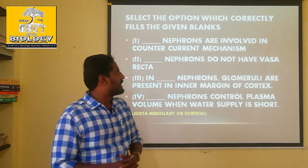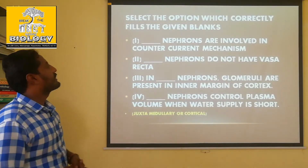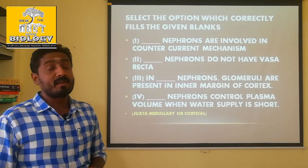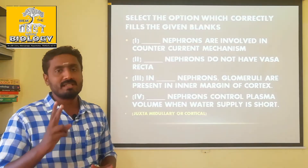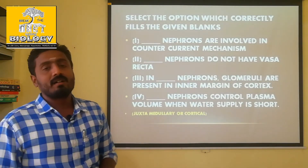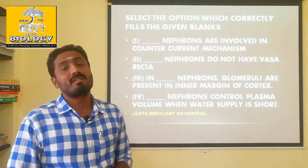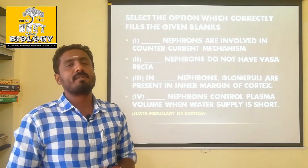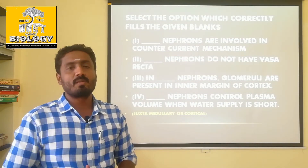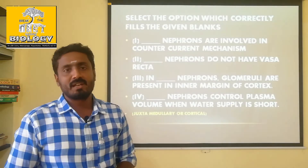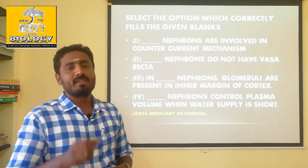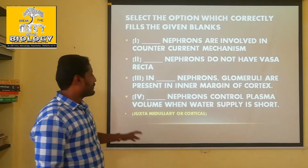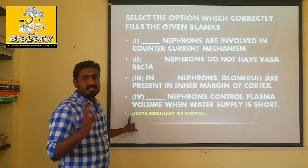First one: dash nephrons are involved in counter-current mechanism. What is the question asking? Nephrons are asked. There are 2 types: juxta medullary nephrons and cortical nephrons. So here are 2 types of nephrons.